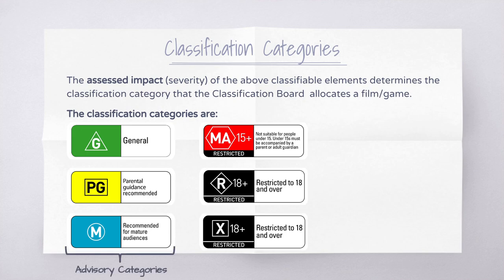The categories on the left — G, PG, and M — are known as advisory categories. Even though M-rated material is recommended for mature audiences, a five-year-old could still legally watch it. Those on the right are restricted categories: by law, if you are 14 years old you cannot watch an MA15+ restricted film — you must be 15. Movie theatres and DVD retailers cannot sell tickets or DVDs for restricted films to people under that age, and the result is a significant fine.